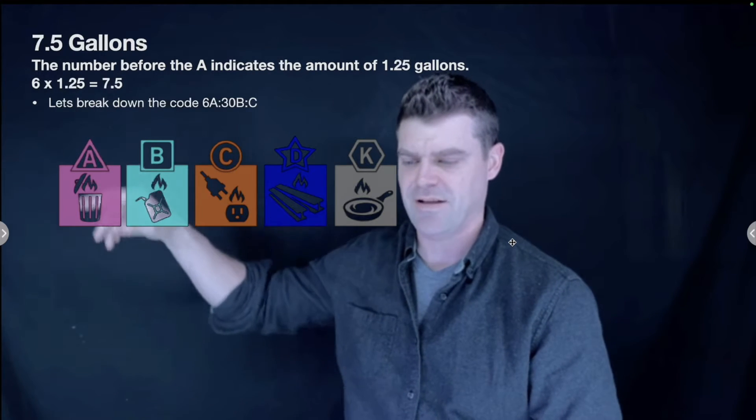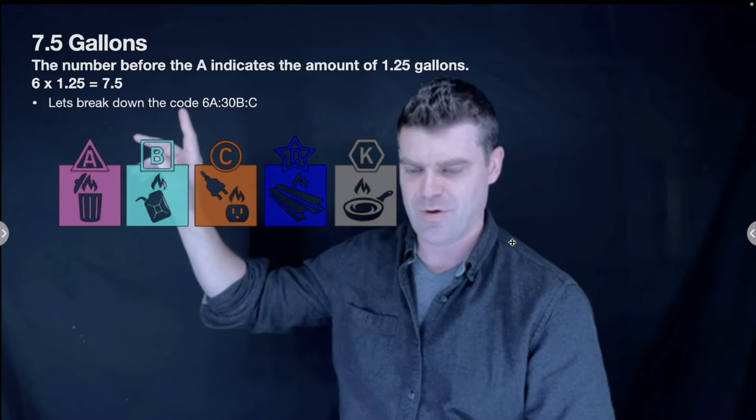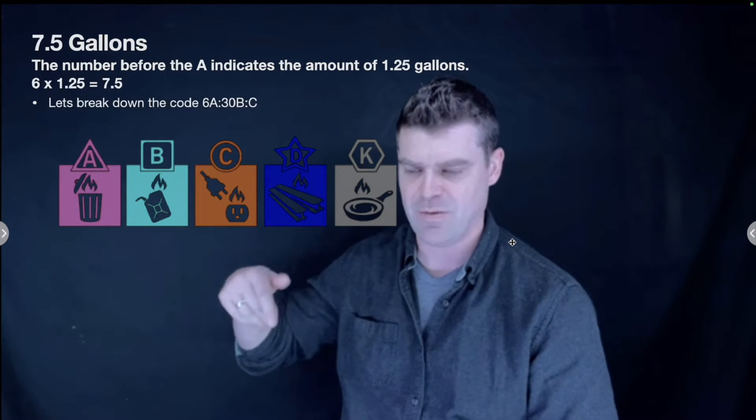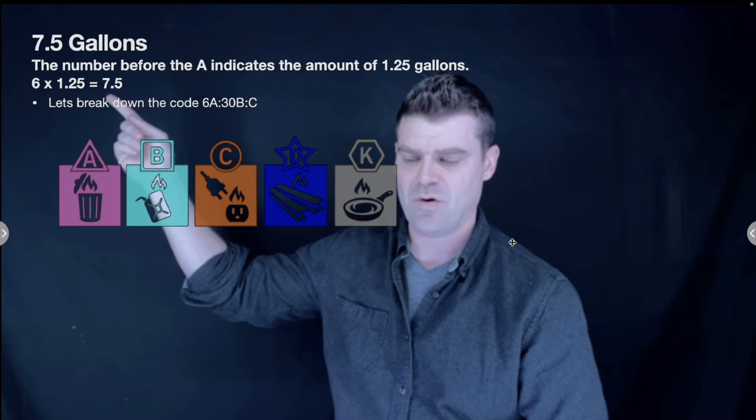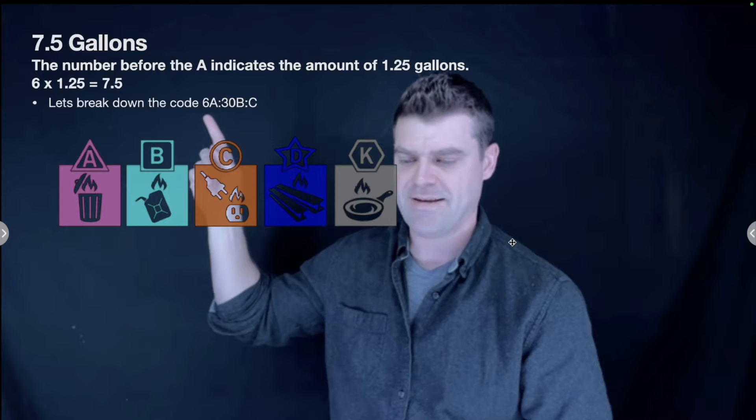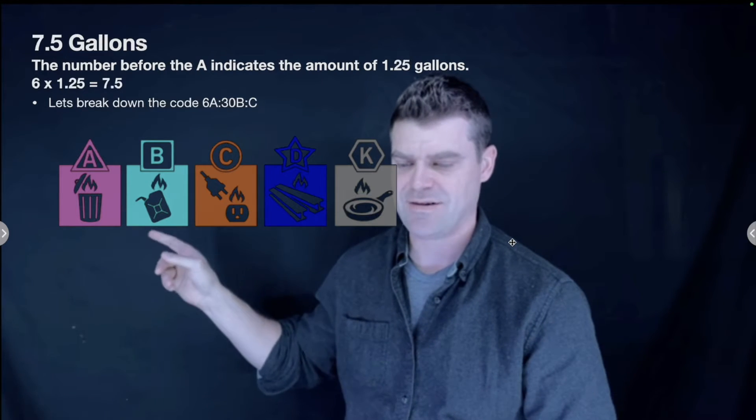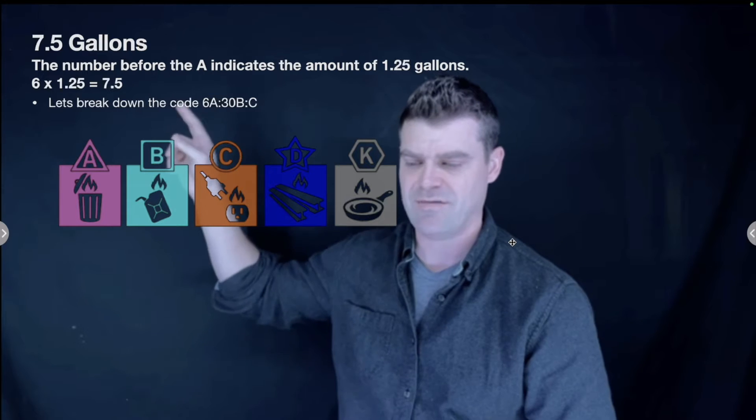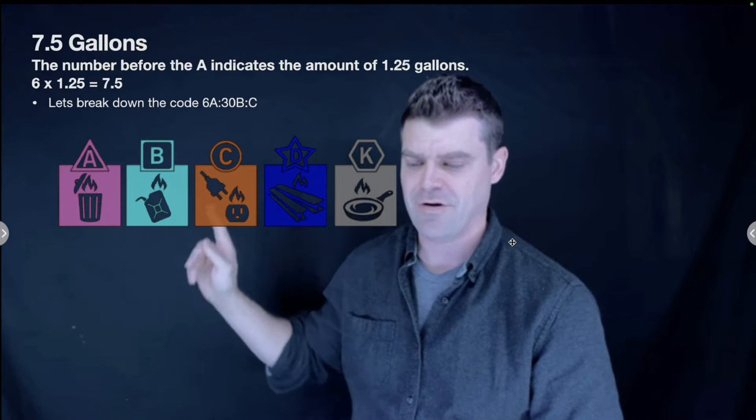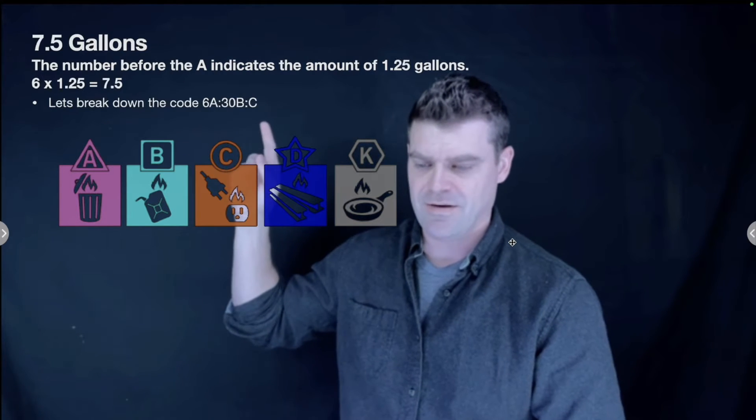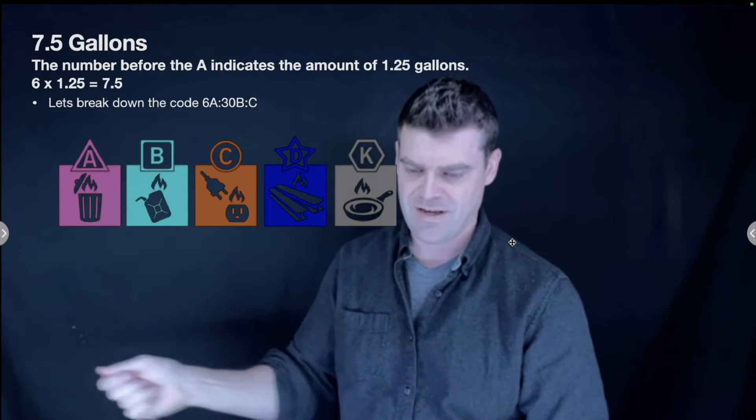The answer is 7.5 gallons. Let's break down this code 6A-30B-C. The 6A is 6 times 1.25 gallons, which equals 7.5 gallons equivalent cooling power of water for a Type A fire. Type A fire is your combustibles like paper, wood, and plastics. The 30B means that for a Type B fire, which is your flammable oils and gas, the fire extinguisher will be able to cover an equivalent amount of 30 square feet of that liquid.